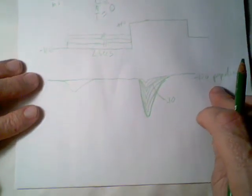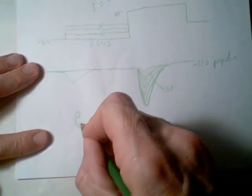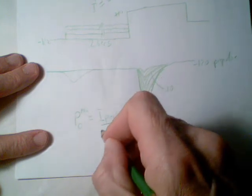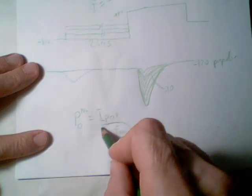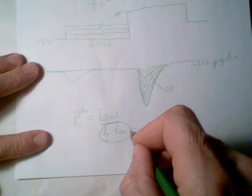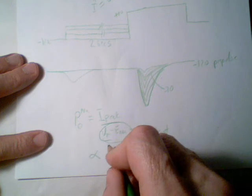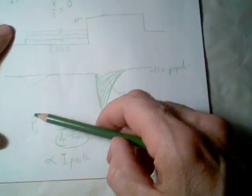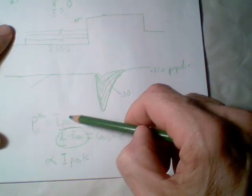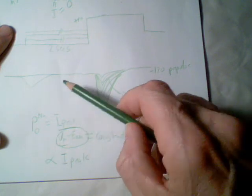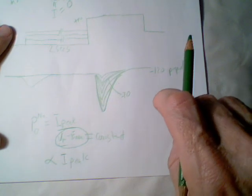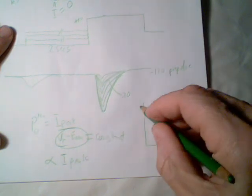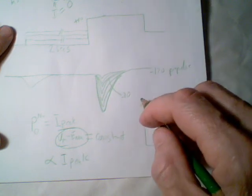We've kept the driving force exactly the same, so using the same trick from the activation curve: the probability of the channel being open is just the peak current divided by the driving force, Vm minus E_rev. Since we stepped to plus 10 each time, this driving force was constant. That tells us that open probability is actually just proportional to the peak current. We're going to plot this open probability as a function of the prepulse voltage, which tells us the extent to which channels are remaining in the closed state — therefore not in the inactivated state — at these different potentials.